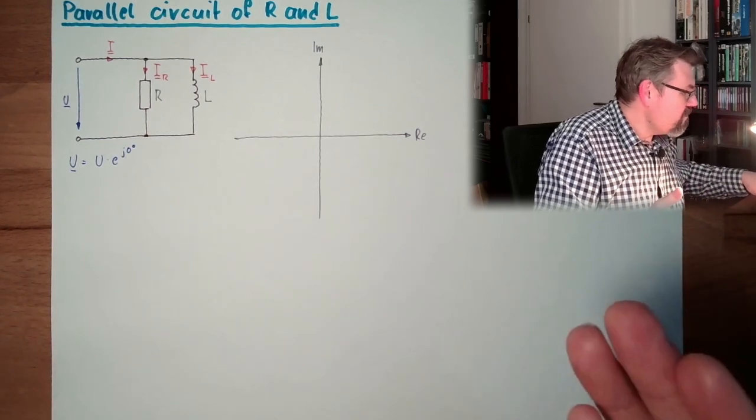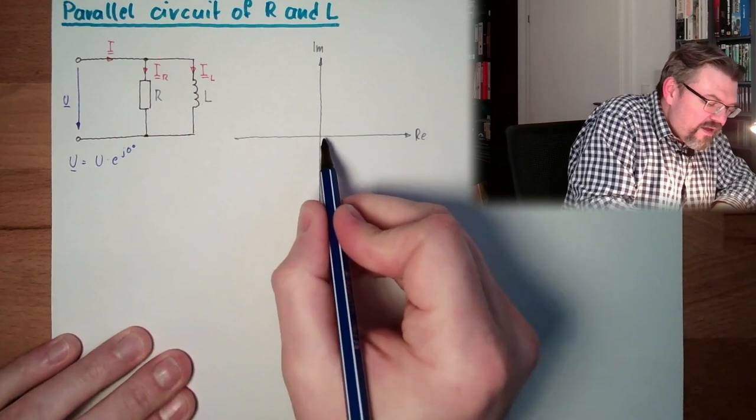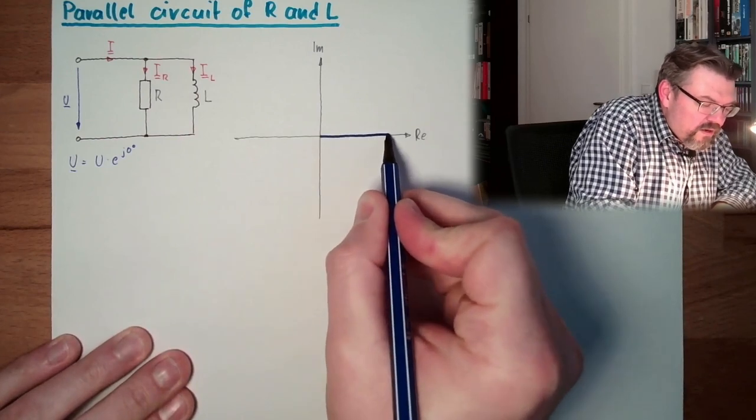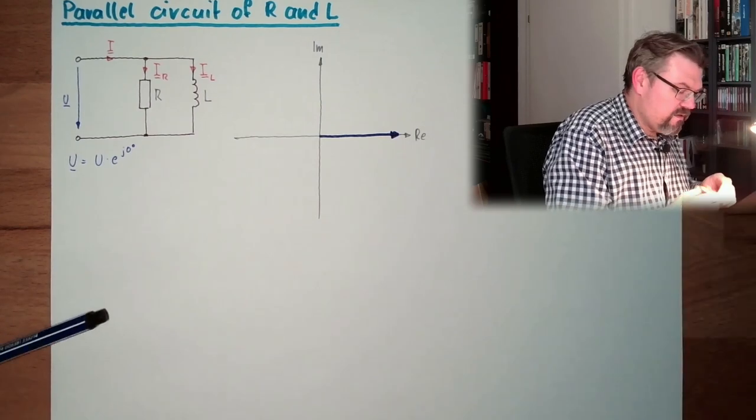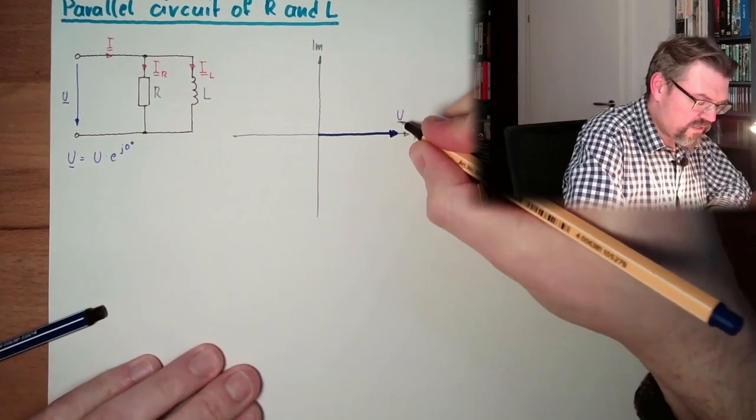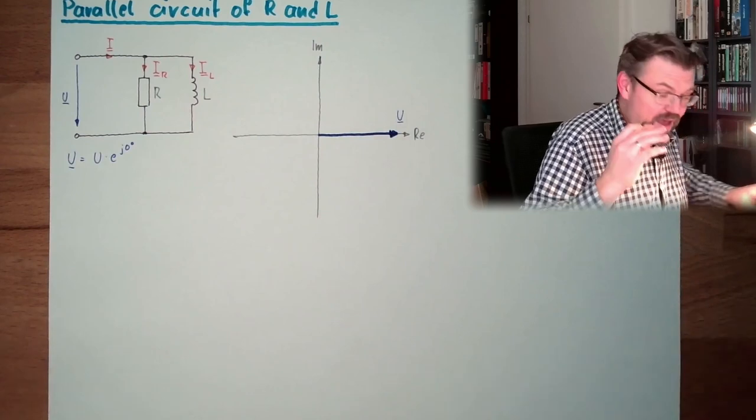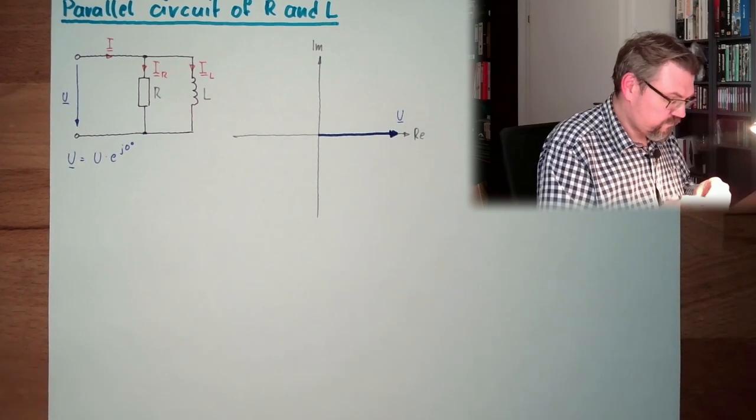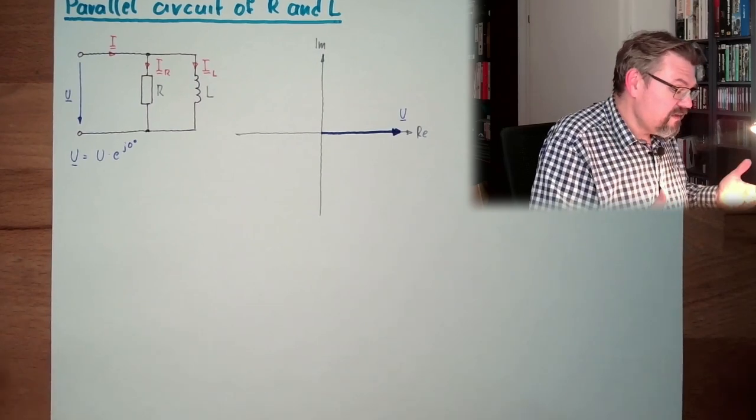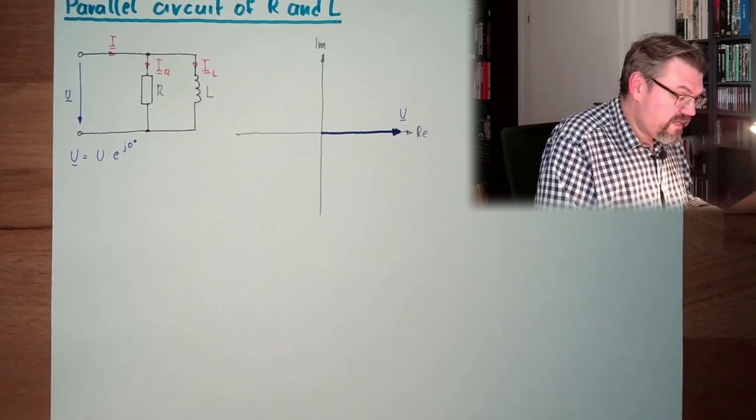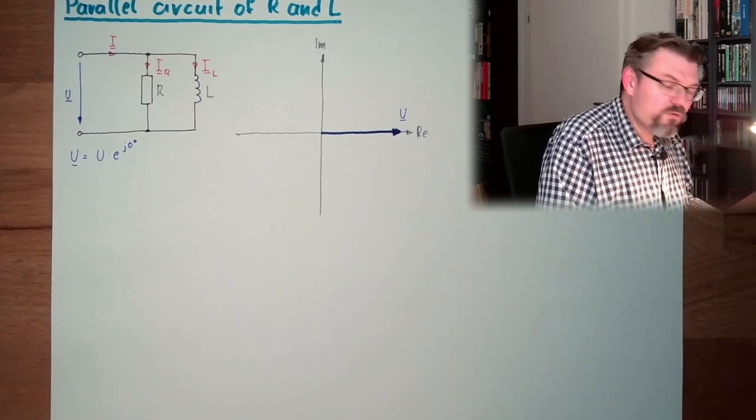This means my voltage is here in my real axis because I am not my own enemy, I can select it like that. Here is my U, this is the point in time I am observing. And the rest of the things I have to deal with them somehow, how they look like.